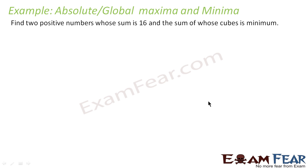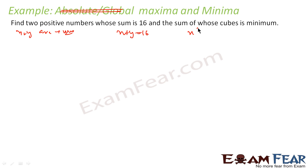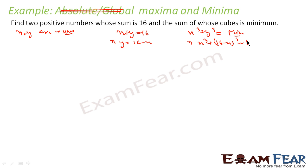Let us take one more example. We need to find two positive numbers whose sum is 16 and whose sum of cubes is minimum. Here also it is not the absolute maximum-minimum portion. x plus y is 16 and x³ + y³ is minimum. Using the same approach, y = 16 minus x, so this becomes x³ + (16 − x)³ having a minimum value. Let us assume the function f(x) = x³ + (16 − x)³.